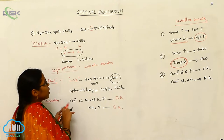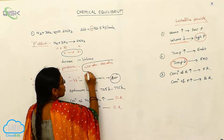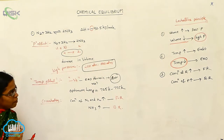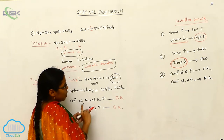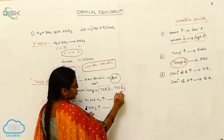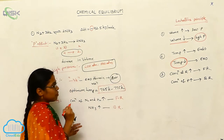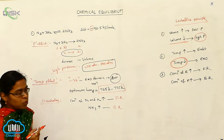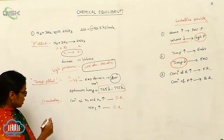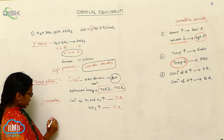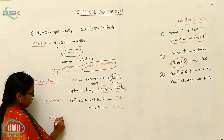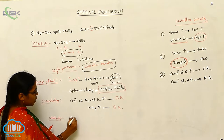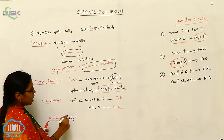So here we are using the pressure of 200 atmospheric to 500 atmospheric pressure, and the temperature of 725 Kelvin to 775 Kelvin. In this process, we are also using a catalyst. The fourth effect is the catalyst, which is iron.